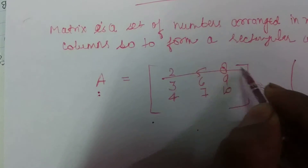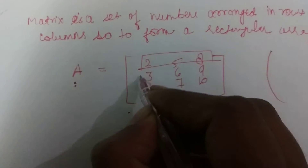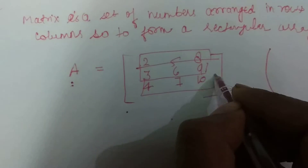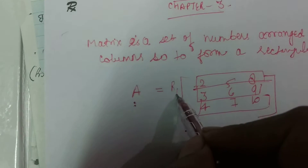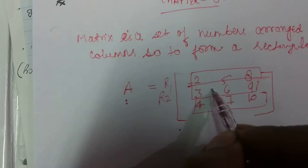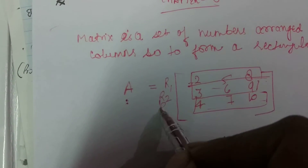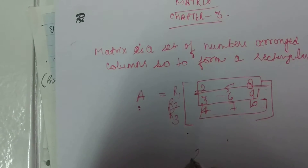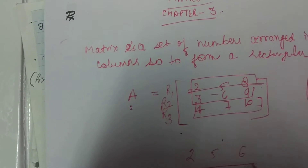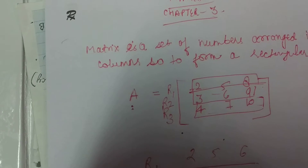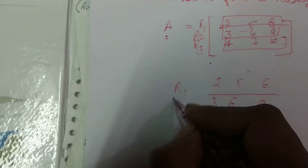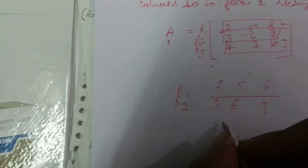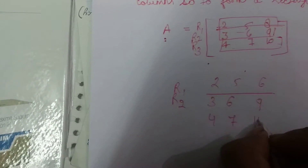Now let's talk about rows and columns. Horizontal lines are our rows. So this is R1, this is R2, and this is R3. For example: 2, 5, 8 — this is R1; 3, 6, 9 — this is R2; and 4, 7, 10 — this is R3.